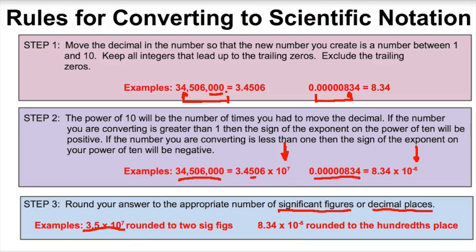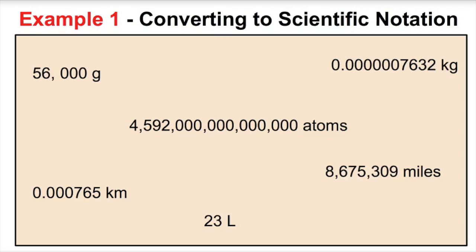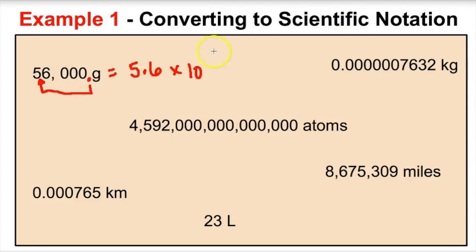Let's work some examples converting to scientific notation. For 56,000, the imaginary decimal is at the end. We move it between the 5 and the 6 to get 5.6. We had to move the decimal four times, and since the number is bigger than one, the exponent is positive. So 5.6 times 10 to the fourth is the correct answer.